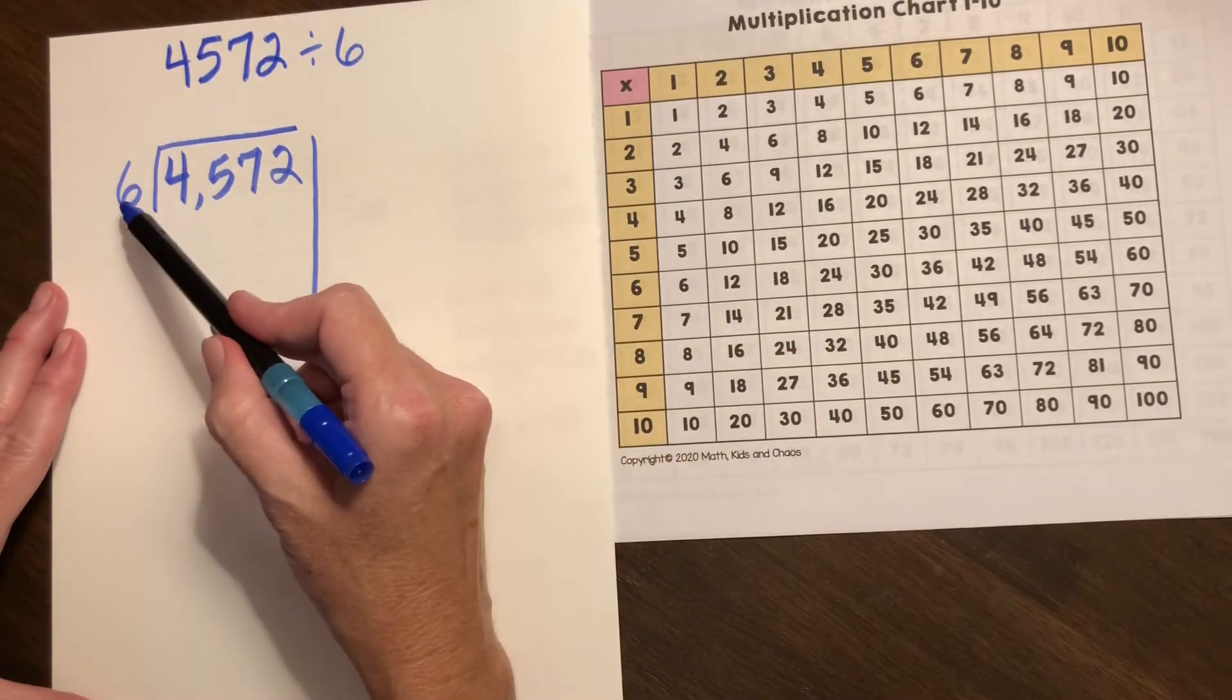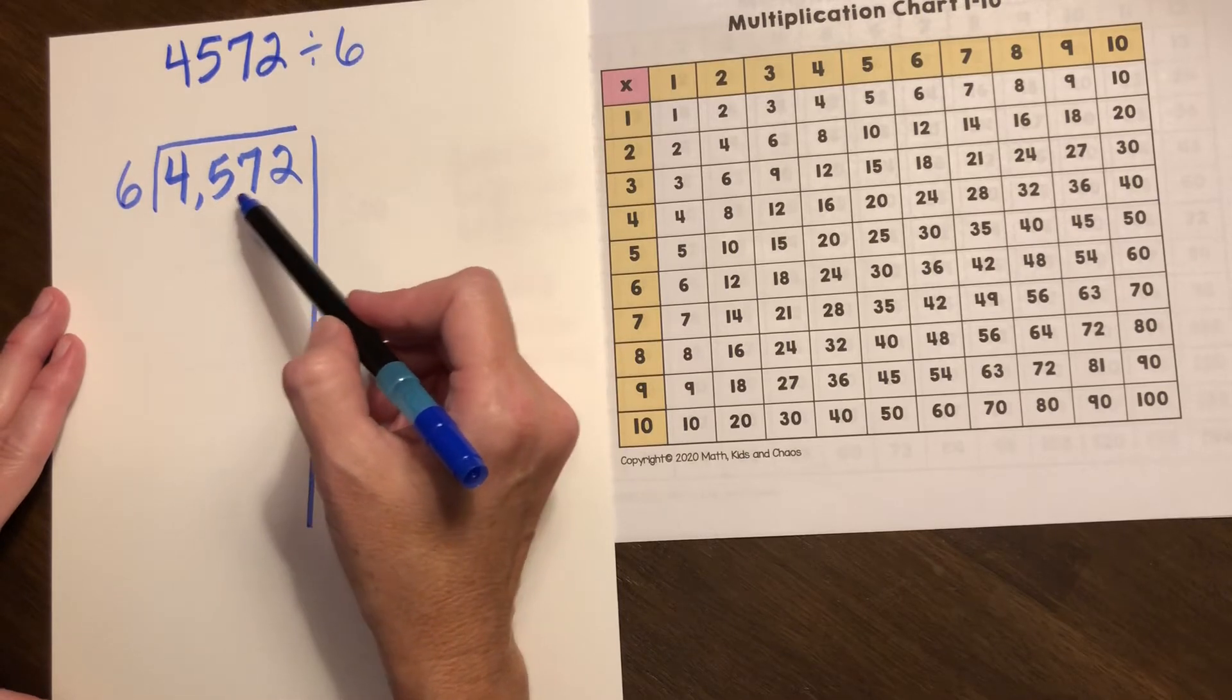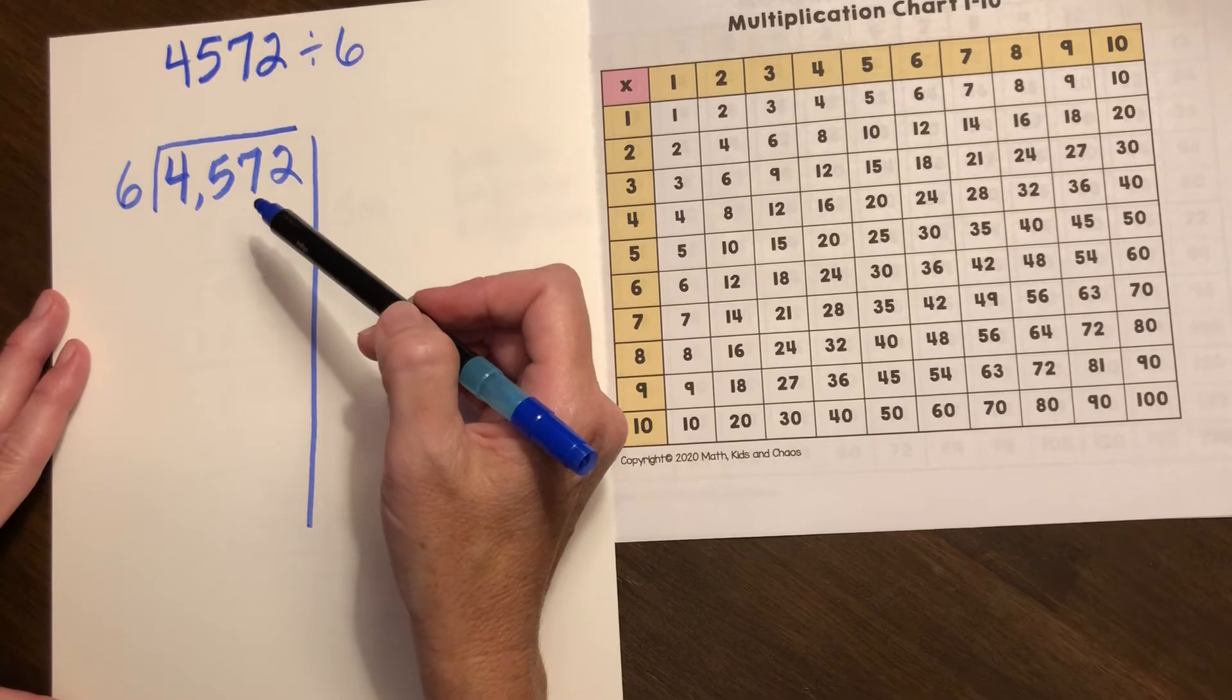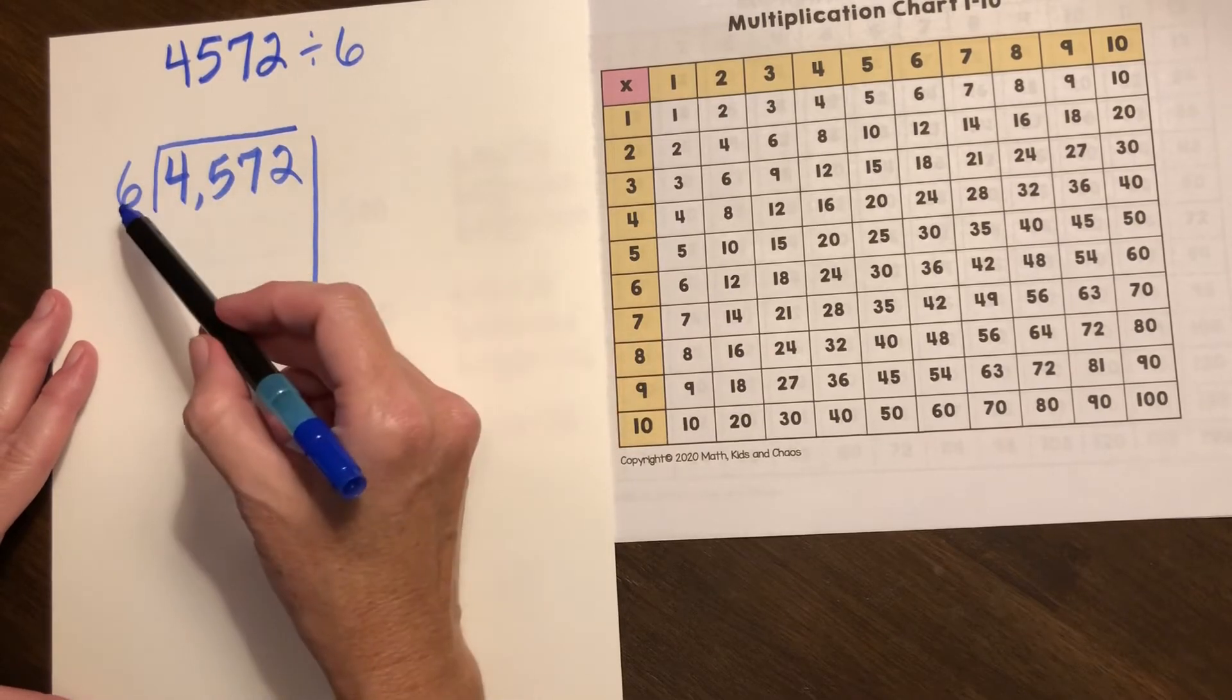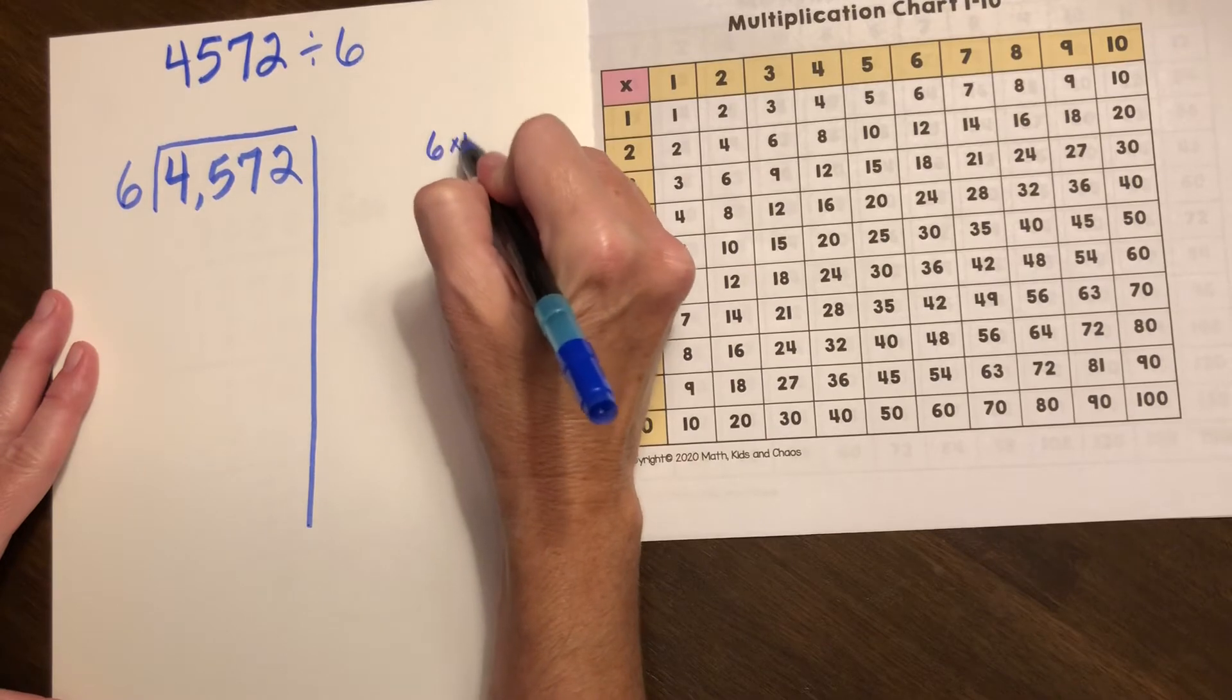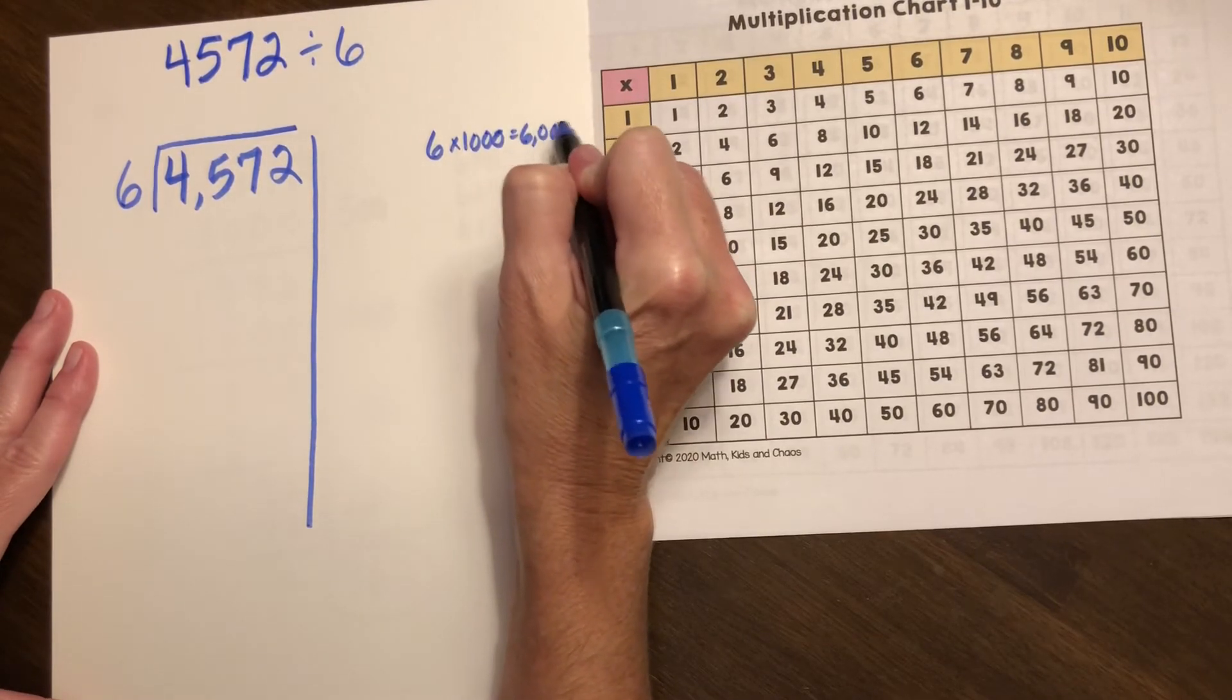How many groups of six can we make out of 4572? So thinking again of my multiplication facts and friendly numbers, I can think well it's already in the thousands, I could do six times a thousand but that equals six thousand which is way too big.